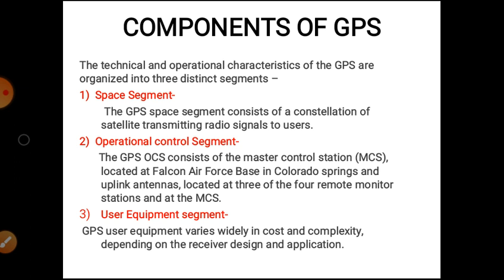Let's discuss each one. First, space segment: the GPS space segment consists of a constellation of satellites transmitting radio signals to the user. Second, operational control segment: this consists of the master control station located at Falcon Air Force Base in Colorado Springs, and uplink antennas located at three or four remote monitoring stations at the MCS (master control station). Third, user equipment segment: the GPS user equipment varies widely in cost and complexity depending on the receiver design and application.